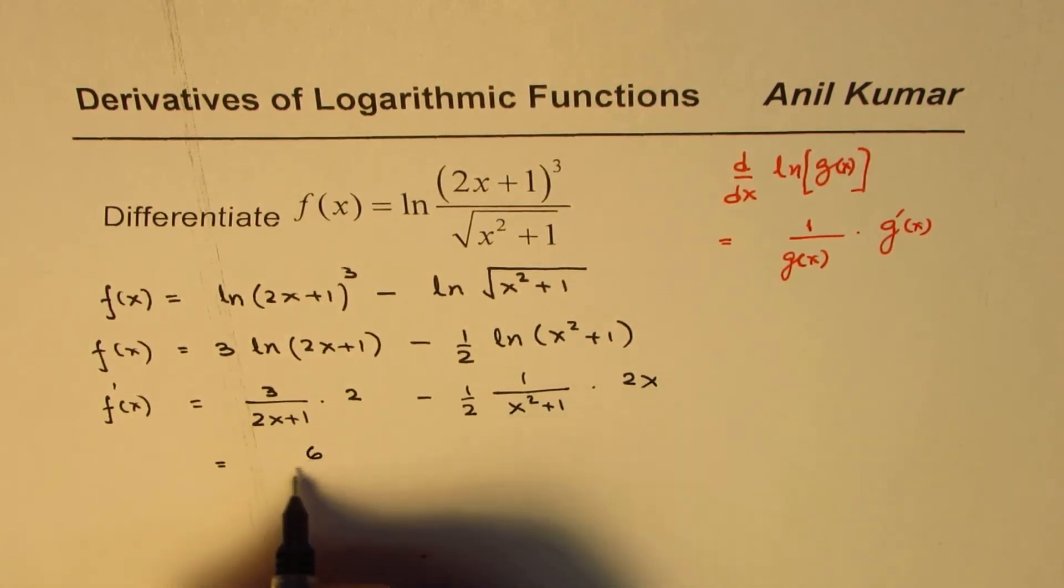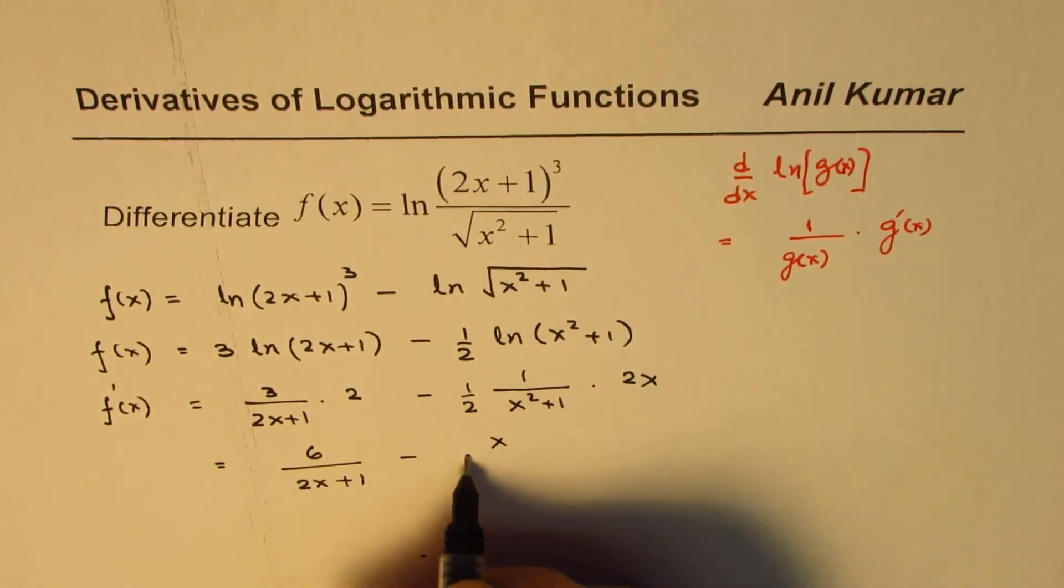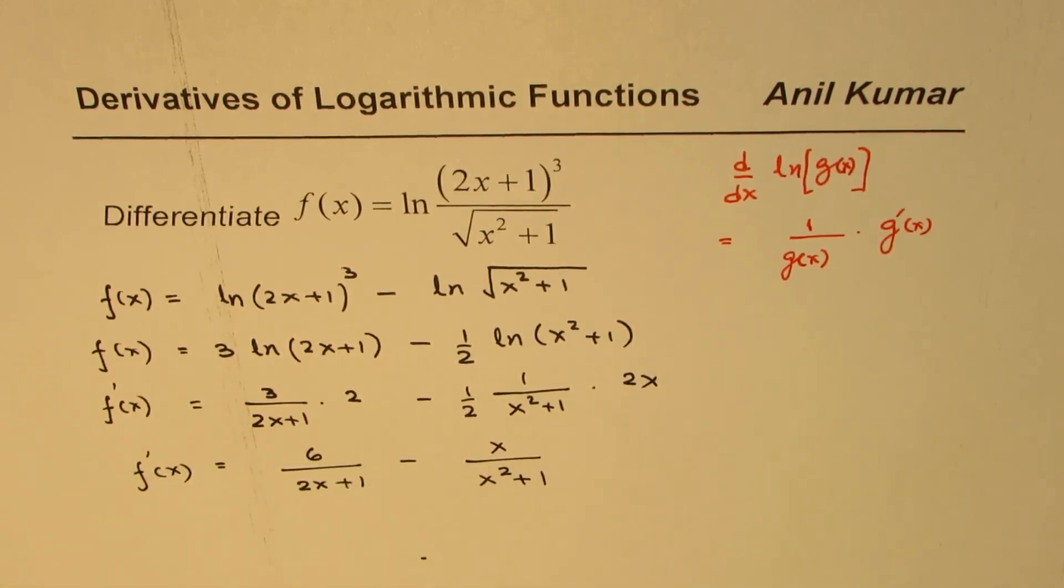So that gives us, 3 times 2 is 6 over (2x+1), minus—the 2 and 2 cancel—x over (x²+1). That becomes the derivative for the given function.